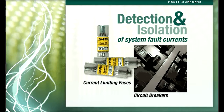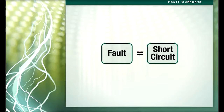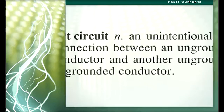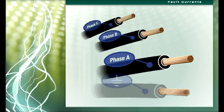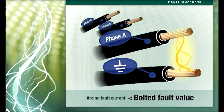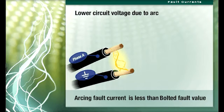Detection and isolation of system fault currents is generally achieved with circuit breakers or current limiting fuses. The term fault is often used interchangeably with short circuit, while a short circuit is a fault, not all faults are short circuits. In general, a short circuit is an unintentional hard connection between an ungrounded conductor and another ungrounded conductor or grounded conductor. Current will also flow between conductors of differing potential through an arc. The arcing fault can occur between phases and between phase and ground, and arcing fault current is considerably less than the bolted fault value.